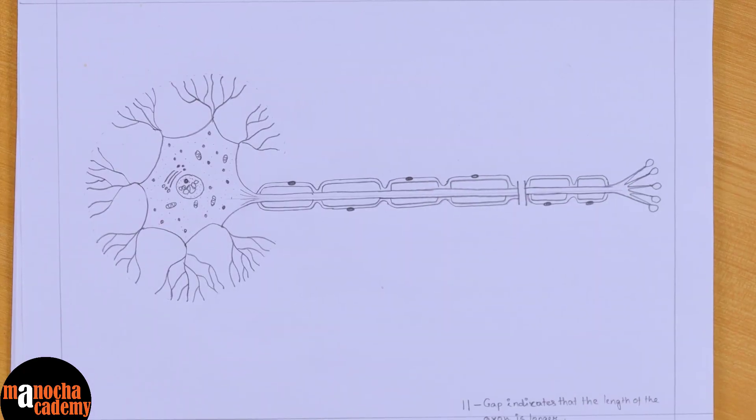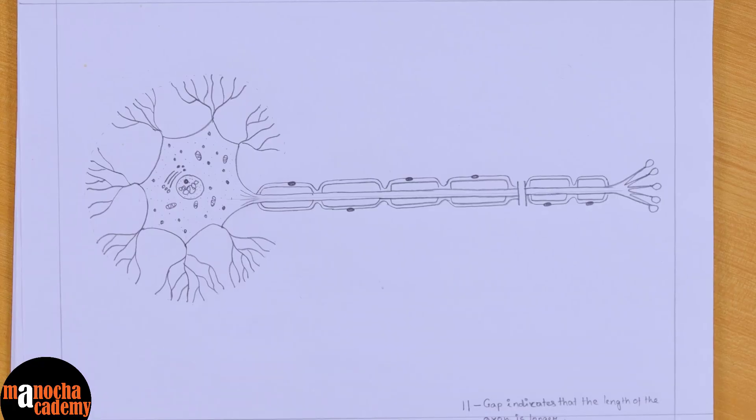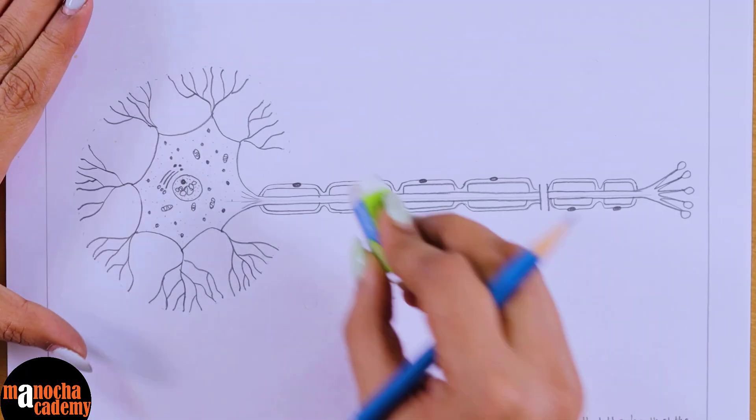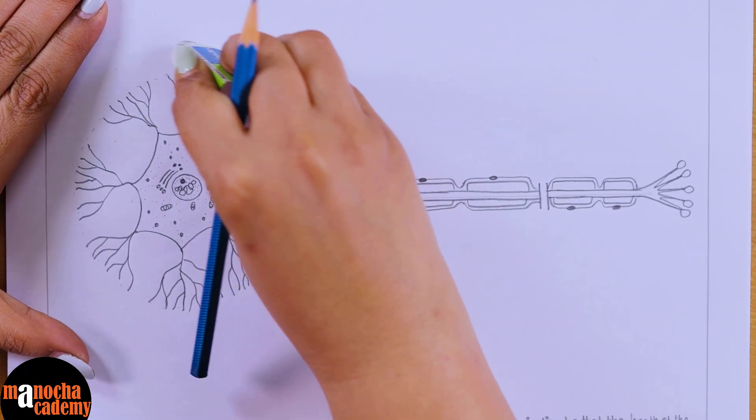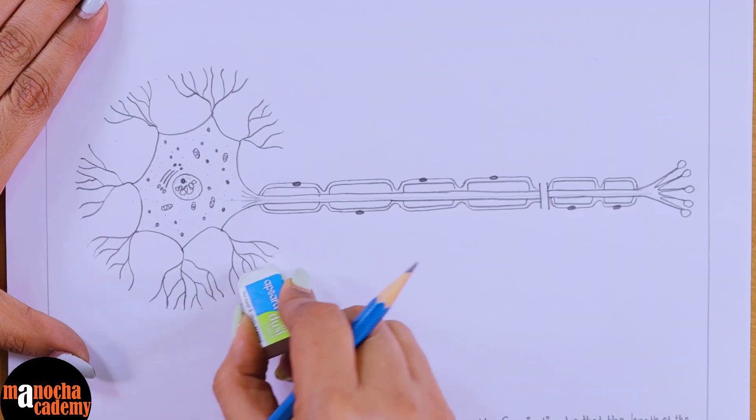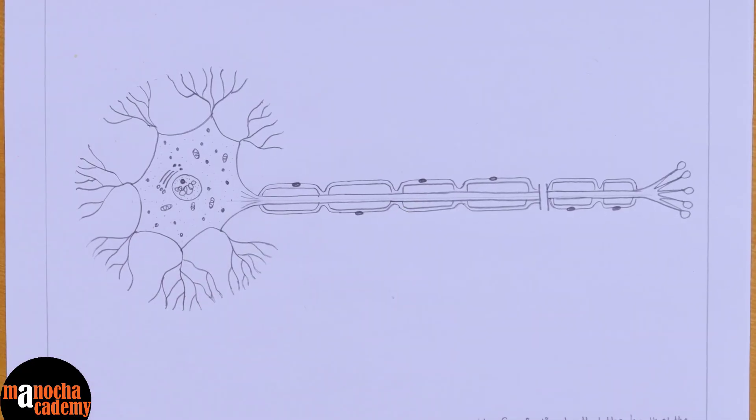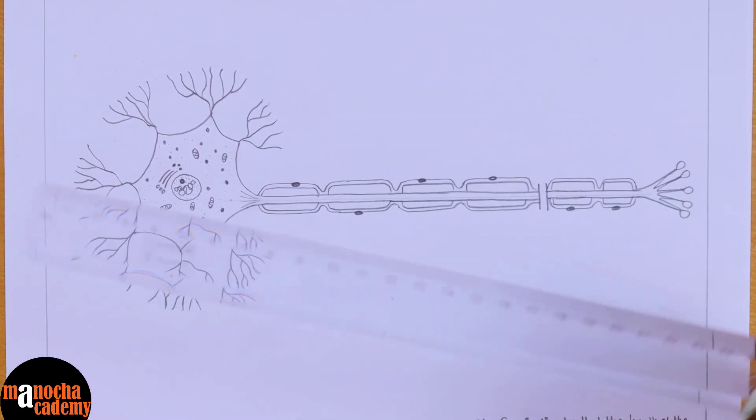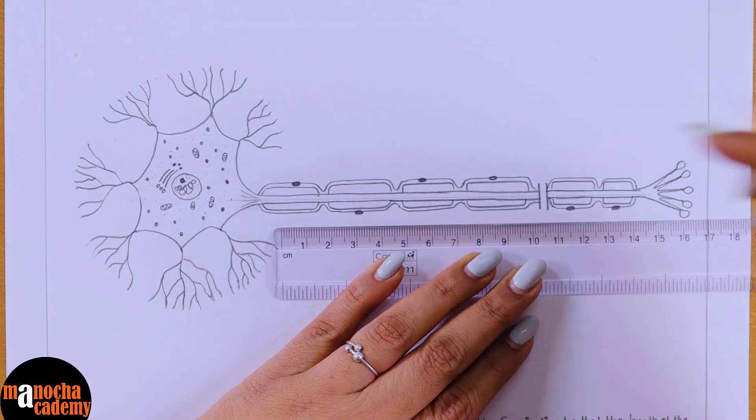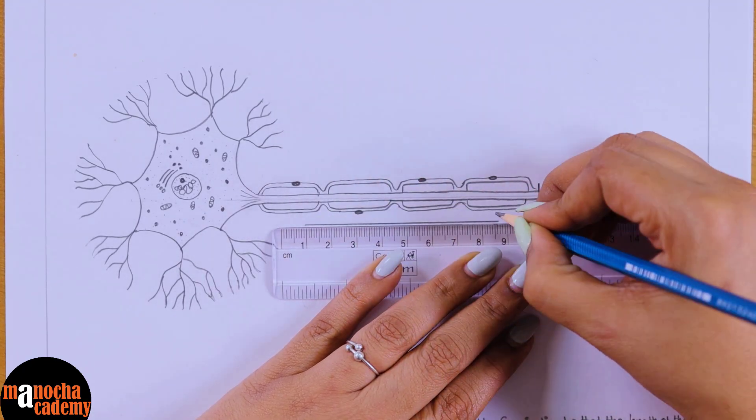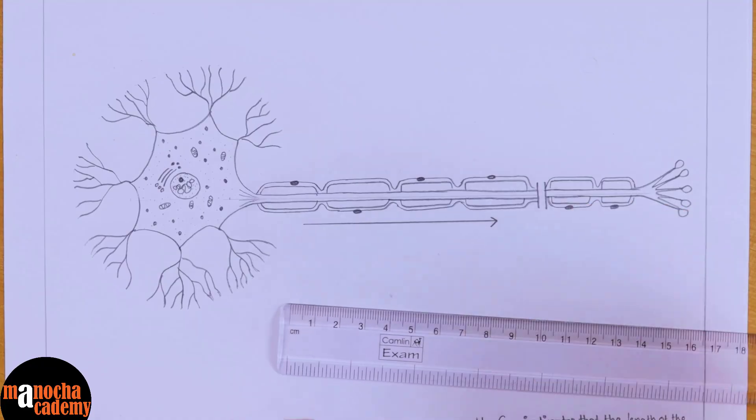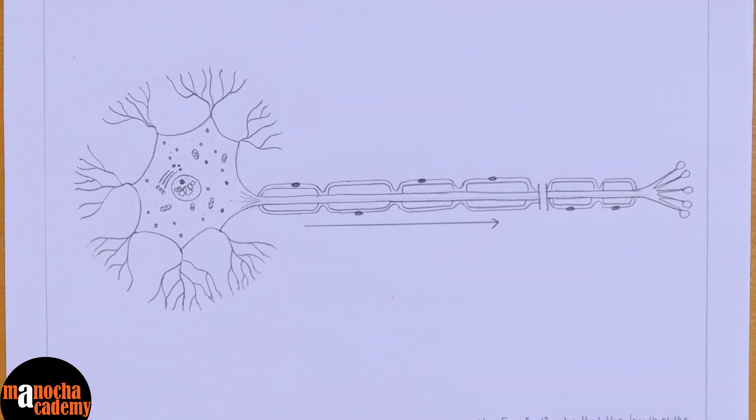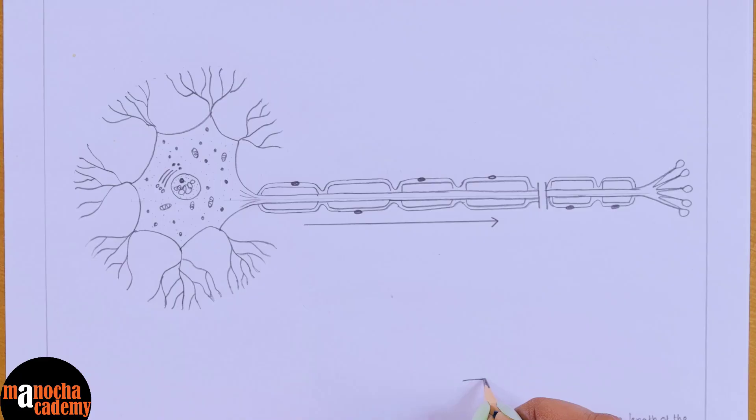Right, so with that we come to the end of the diagram. Now coming to the labeling, so I'll get rid of this reference line first. Now we'll start with the labeling. So for the labeling, what we'll do is we'll label as much as we can above and below. But before that we'll use a line, we'll use an arrow. What does this arrow indicate? This arrow indicates the direction of flow of impulse. So again we'll make the index and we'll write 'arrow indicates the direction of flow of impulse'.